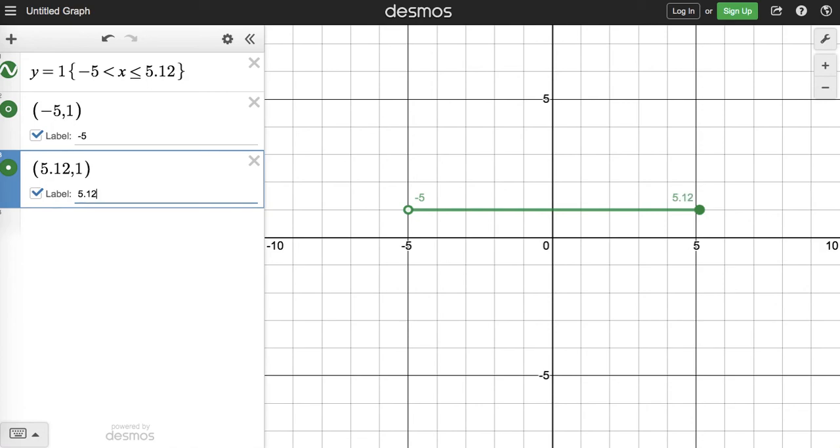This is a nice way to make inequalities on Desmos. You can graph them this way with just a straight horizontal number line. If you want to use this in your project, this is a great idea to make the number lines in your project digital.